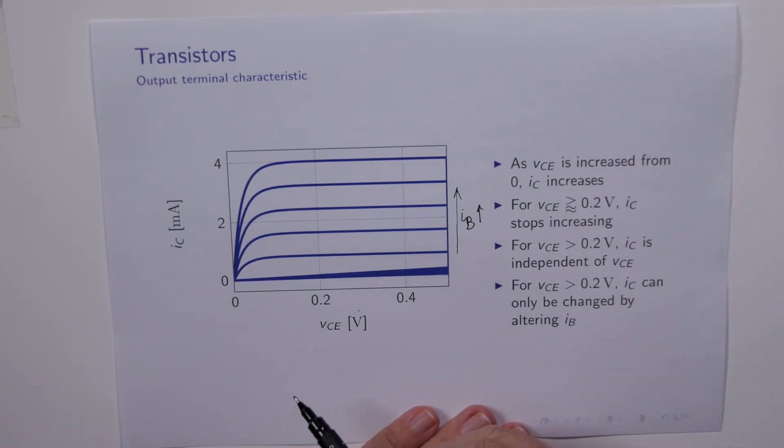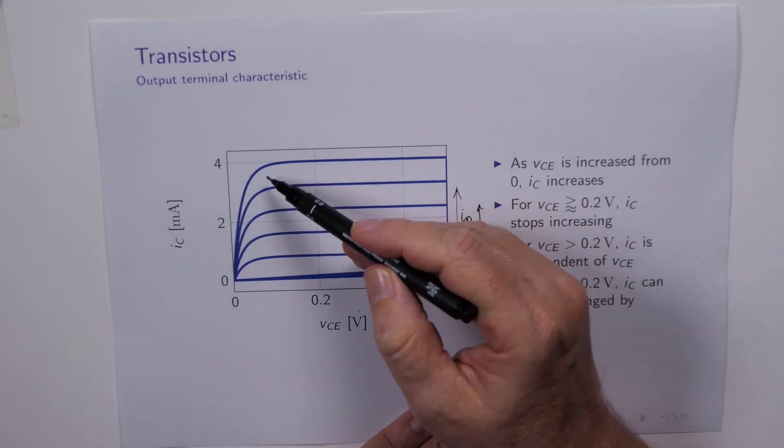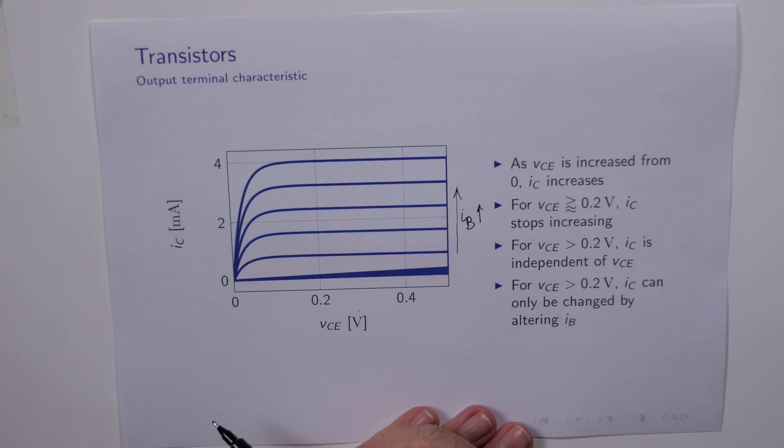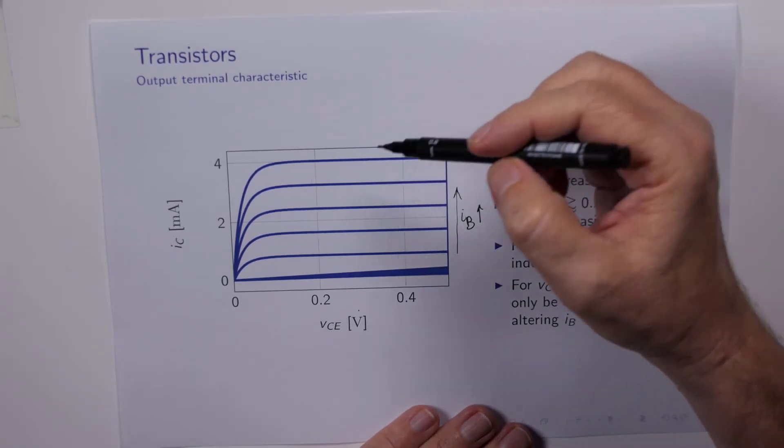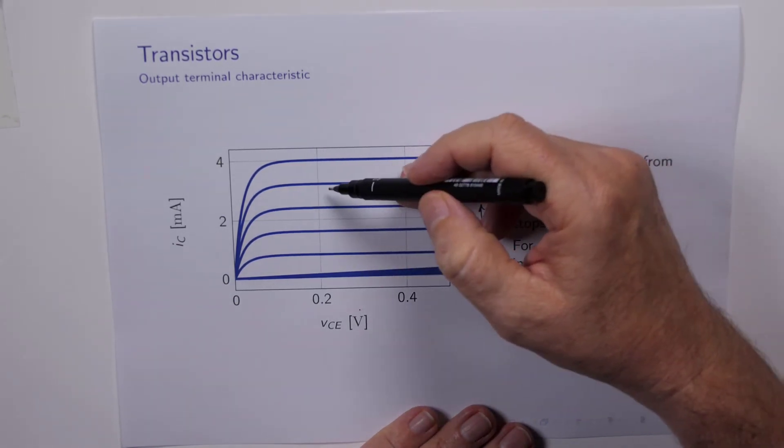So for VCE greater than around about this value here, it's a little bit nebulous, but say around about 0.2 of a volt, IC stops increasing as a function of VCE. For VCE greater than this value 0.2, IC is essentially independent of VCE. As you can see, the current is essentially constant no matter what we do with VCE.